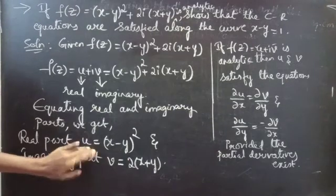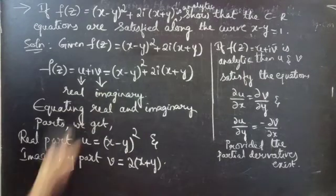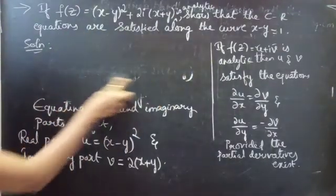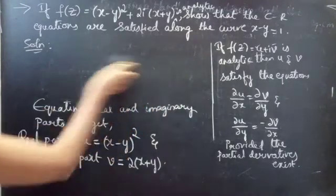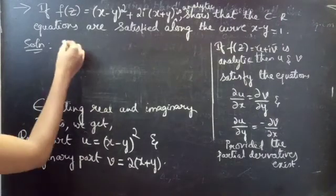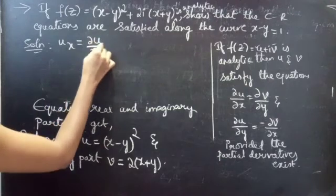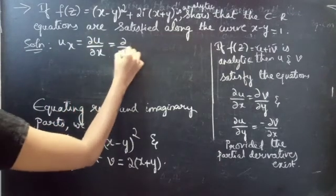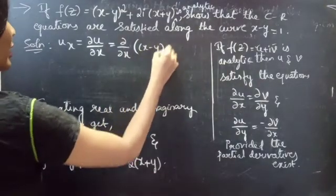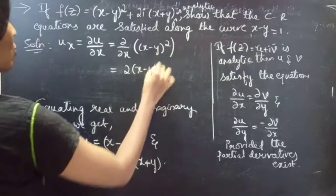This is the real part and this is the imaginary part. Now let's find the partial derivatives of u and v with respect to x and y. ux = ∂u/∂x = ∂/∂x of u.